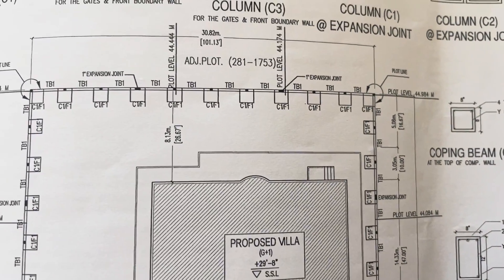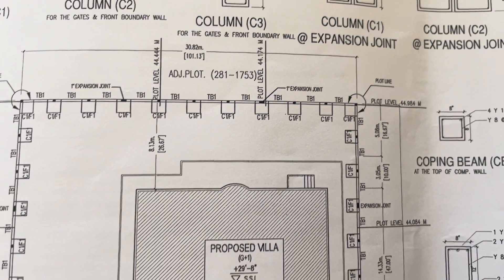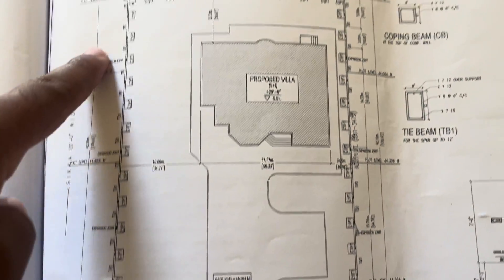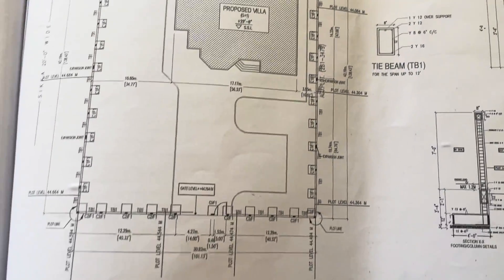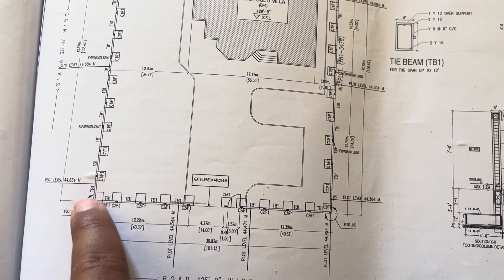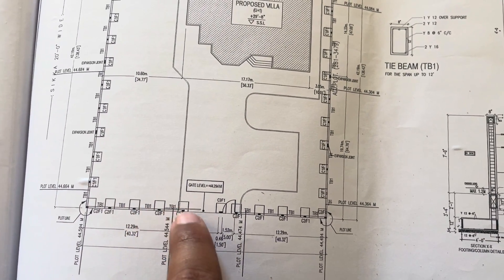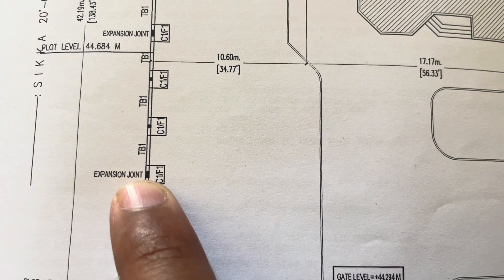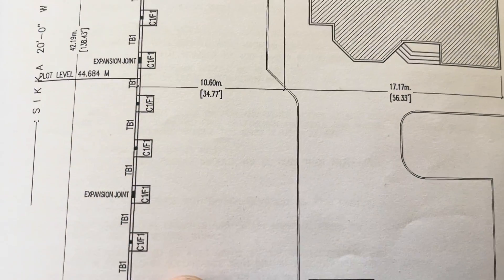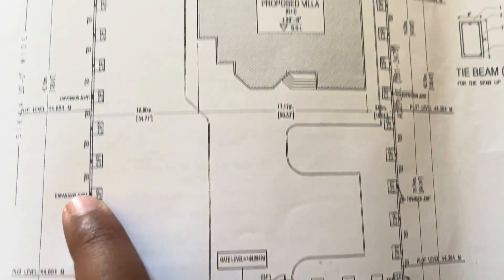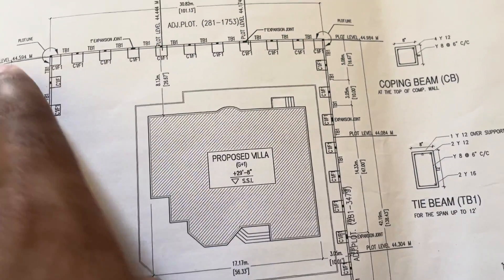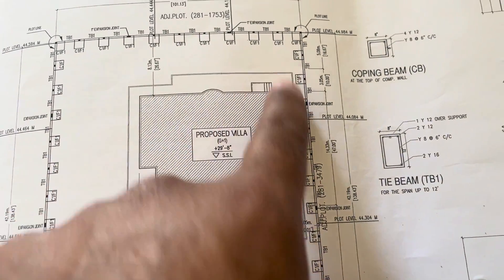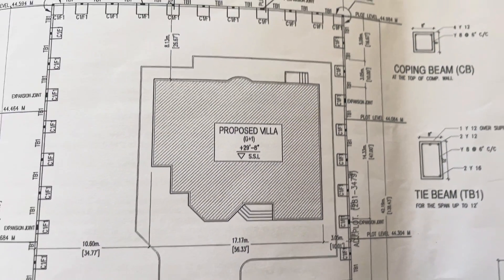First of all, this is the top view for the boundary wall of our villa. This rectangular square shape represents our footings, and the small rectangular shape represents our columns. So these are the columns and footings for the boundary wall. This is our plot limit — under the plot limit you will construct your footing and columns.